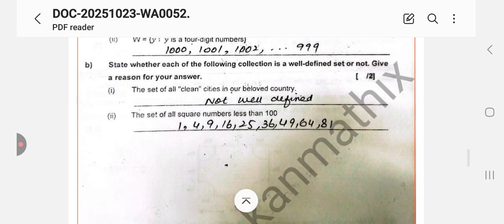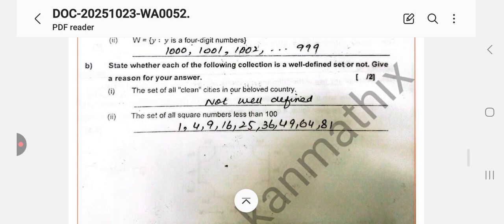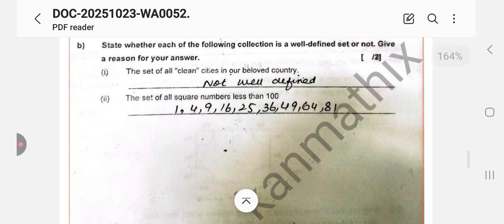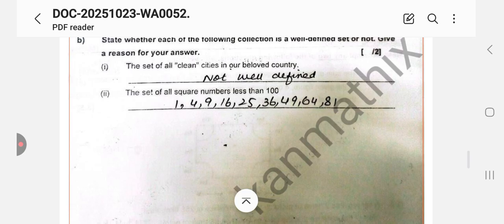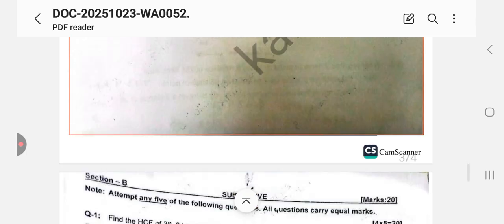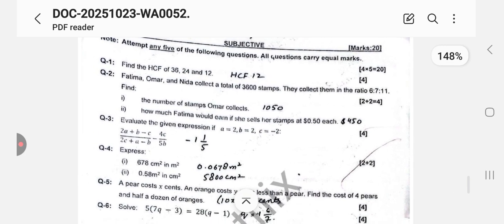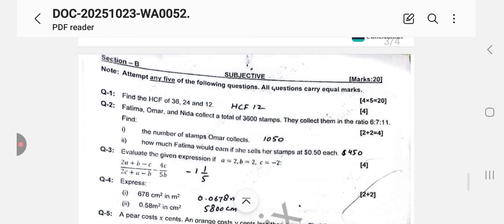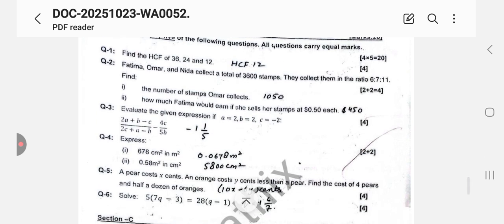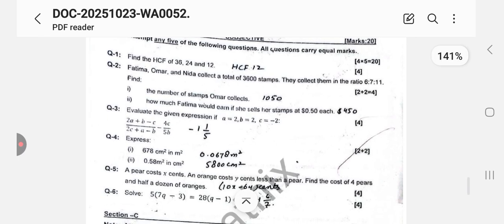Then set notation: x is a positive odd integer such that 13 less than x less than equals to 22. This is the interval which is given, 13 to 22. 13 is not included but 22 is included. 13 to 22, you have all integers: 15, 17, 19, 21. Four digit numbers, we have written here four digit number, the last one is 9999, which will be one more 9 here. Then B, you can write here one more 9. Next, state whether each of the following collection is a well defined set or not. Give a reason for your answer. The set of all clean cities in our beloved country: here we have not well defined. Clean cities, the answer would be not well defined, because there are factors like pollution, noise pollution, and all that. The set of all square numbers less than 100: 1, 4, 9, 16. You can take screenshot of the answers.